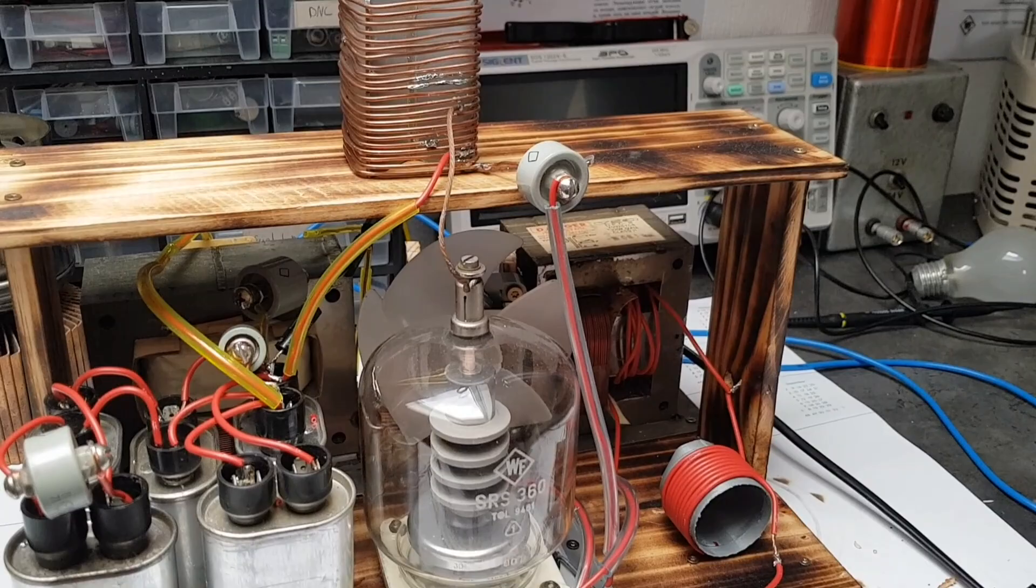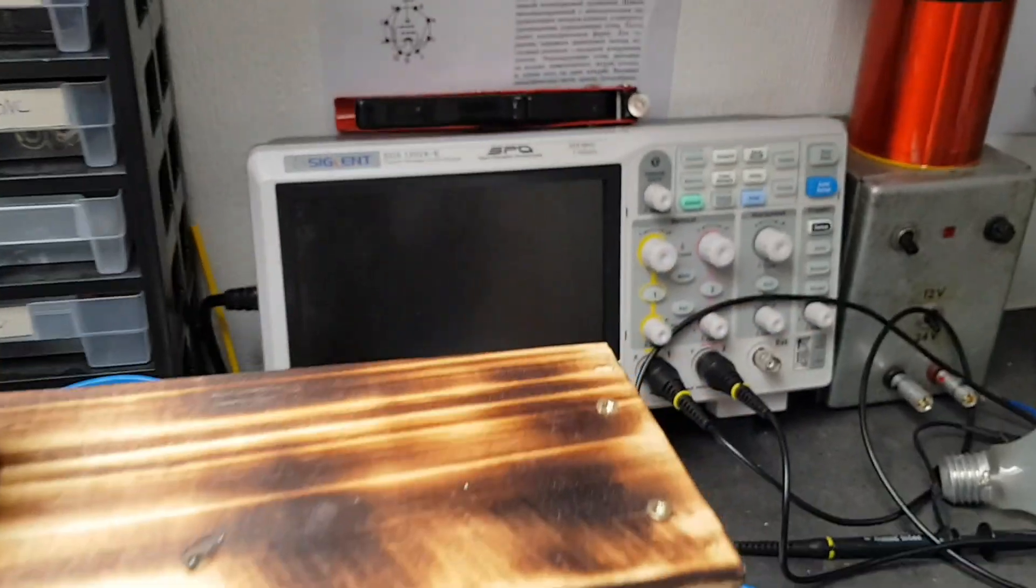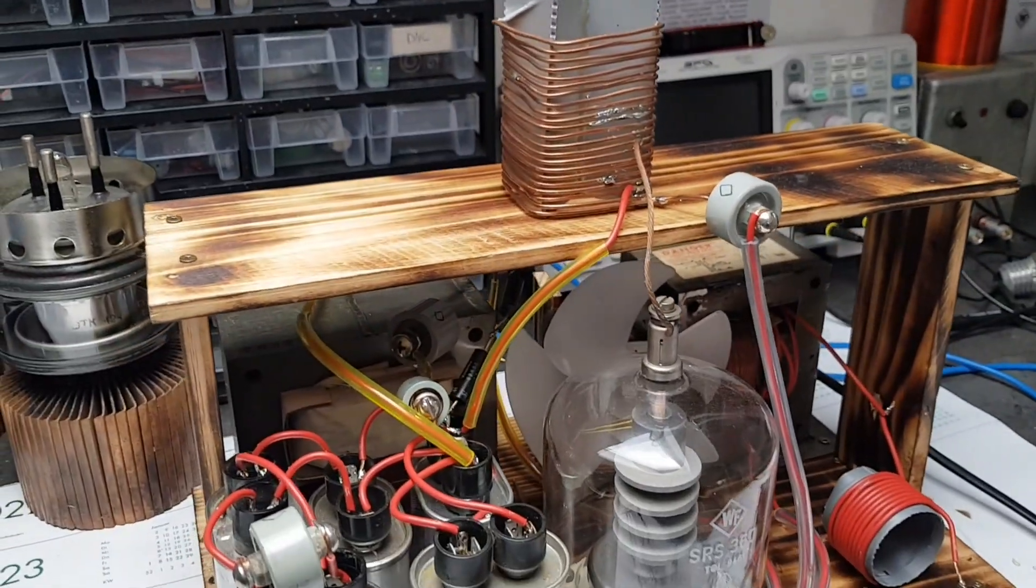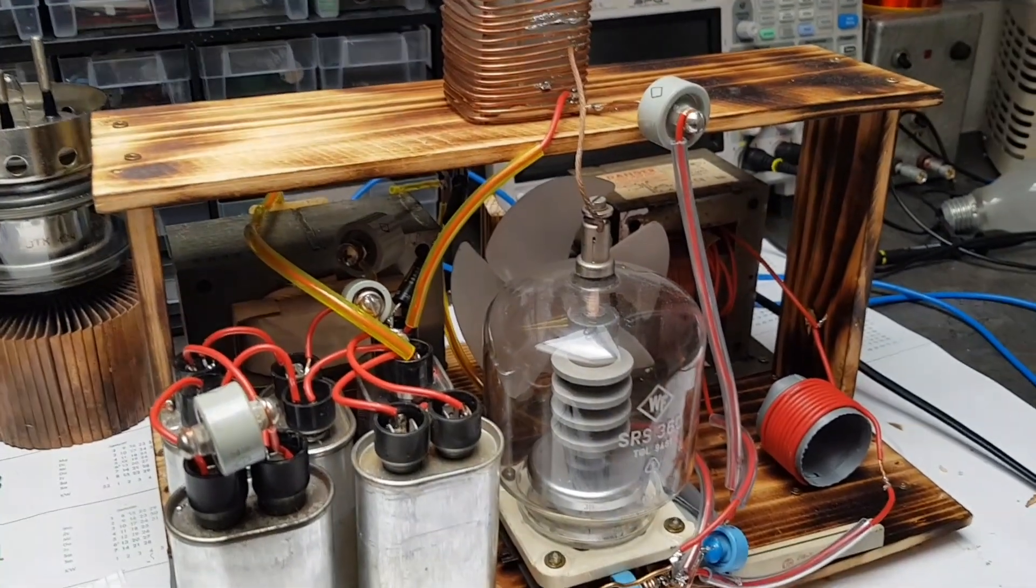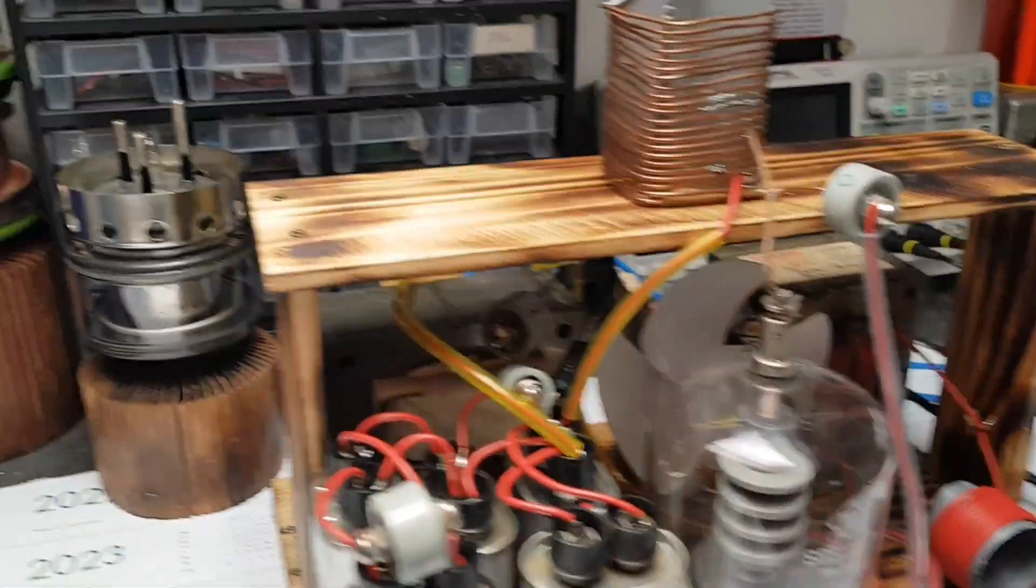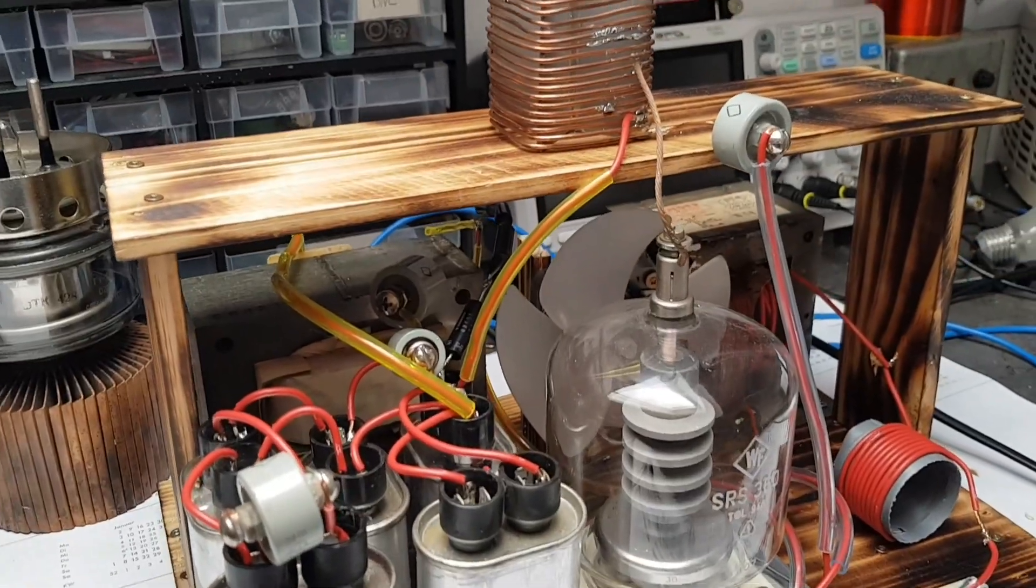And you would definitely have to put sensitive equipment like a scope or function generator, or yeah, really anything that is sensitive, far away from your coil because it can kill your stuff. I accidentally broke a bit of my soldering station with this coil, so yeah, definitely keep that in mind.